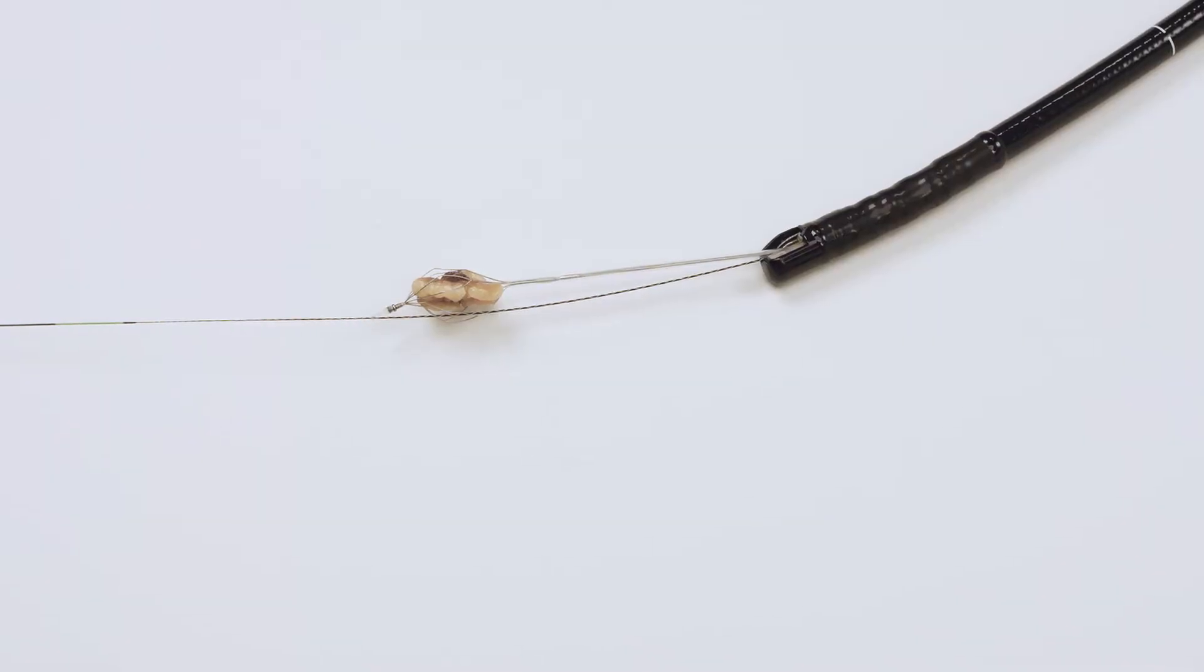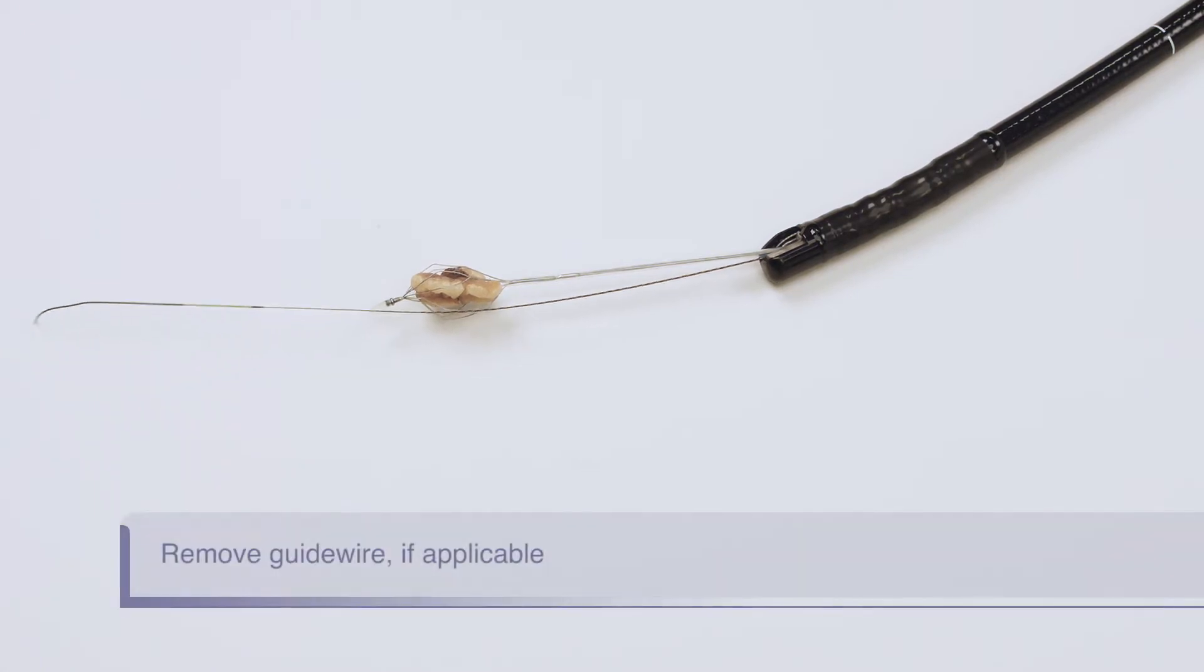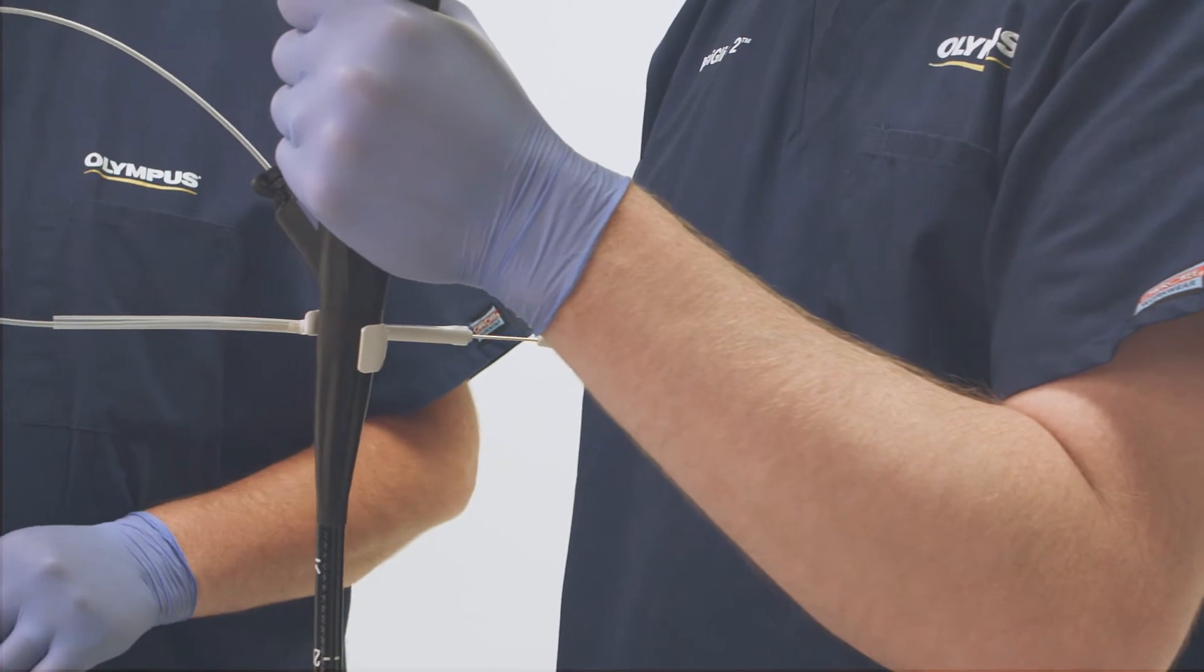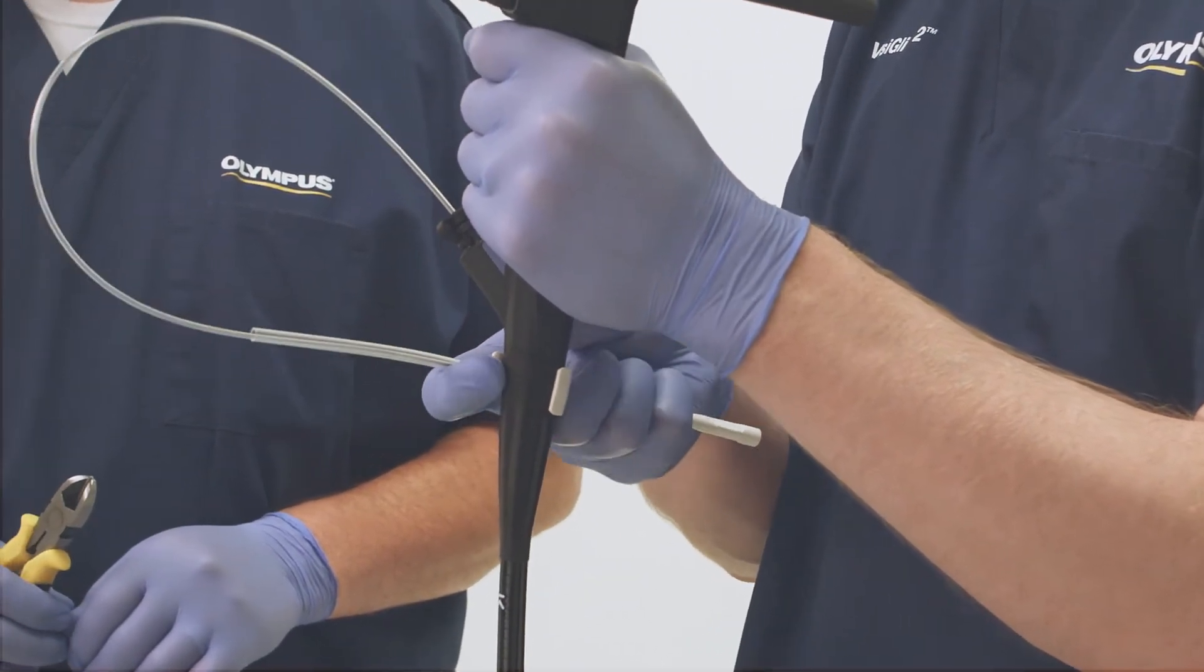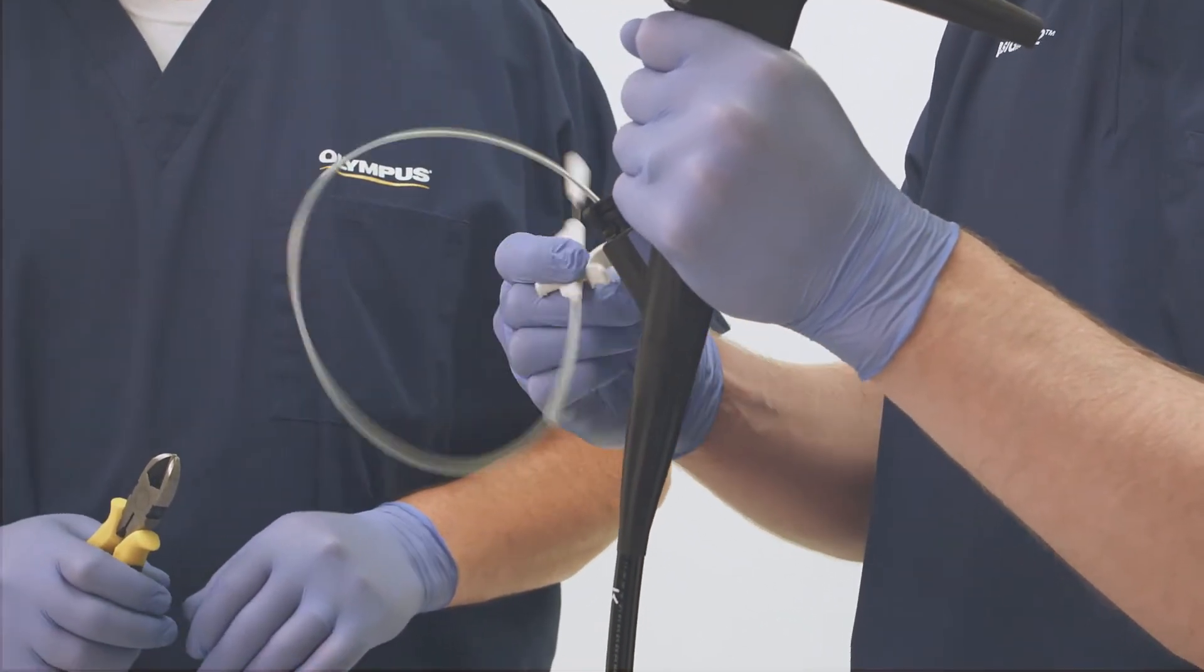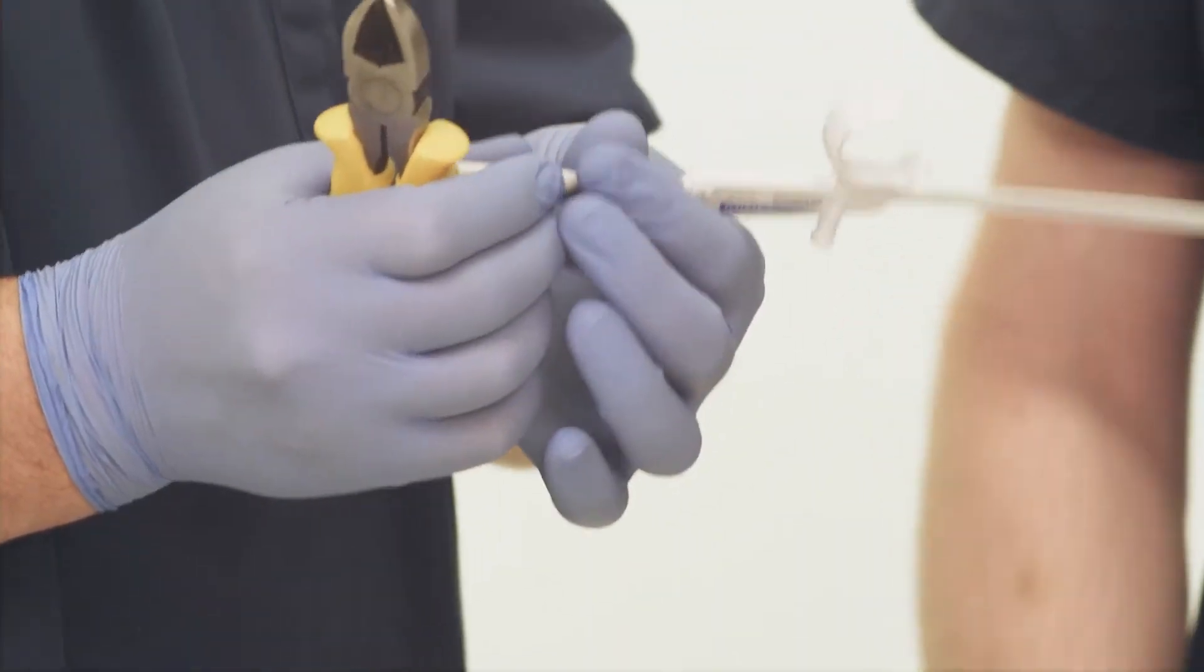In this case, we have a basket that has become trapped in the bile duct due to stone debris that cannot be dislodged. Let's prepare the basket for emergency lithotripsy. If using a wire-guided basket, remove the guide wire from the patient and scope. Separate the basket handle from the boot of the scope to facilitate removing the basket sheath and scope from the patient.